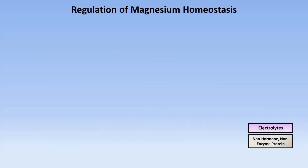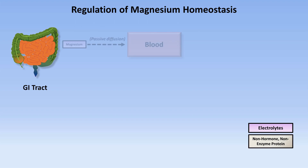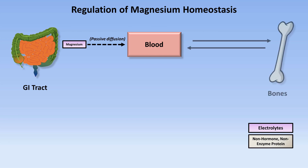Let's take a look at how magnesium homeostasis is regulated. As with all electrolytes, homeostasis begins in the GI tract, where orally consumed magnesium is absorbed, a process which appears to be dependent upon passive diffusion from the GI lumen through the tight junctions between epithelial cells and into the blood. Similar to calcium and phosphate homeostasis, the bones act as a reservoir for huge amounts of magnesium. Unlike calcium and phosphate, however, the magnesium in the bones is not in a tightly regulated equilibrium with the blood, and the bones do not have nearly as important a role in magnesium balance.